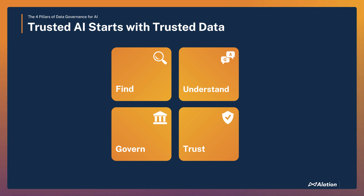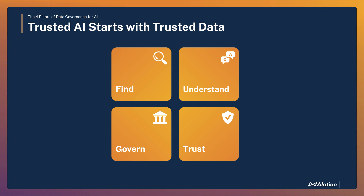Now we understand just how critical it is to find and understand the data being fed into your AI models. We saw how Alation makes it effortless for data scientists to locate the right data using intuitive natural language searches, and quickly gain a comprehensive view of its sensitivity and quality long before it's ever loaded into any AI models. Our data governance managers can feel confident that their teams are working with trusted and well-governed data. With Alation's AI model cards tracking compliance and risk mitigations, Alation ensures that AI initiatives meet regulatory requirements. Ultimately, Alation empowers organisations to use AI responsibly, building trust across the business and with external stakeholders — because when you can trust the data that fuels your AI, your organisation can truly innovate with confidence.